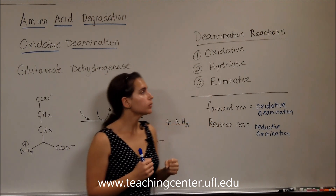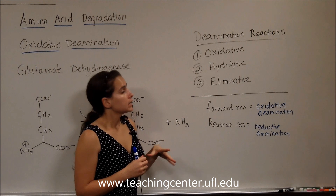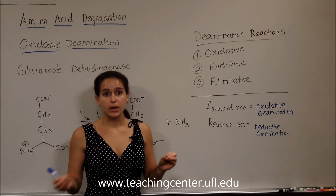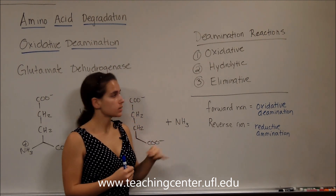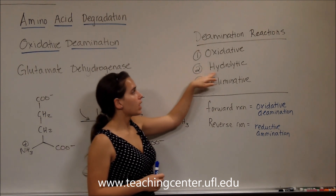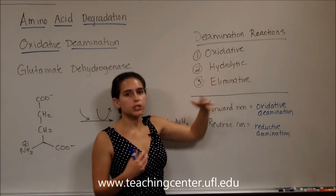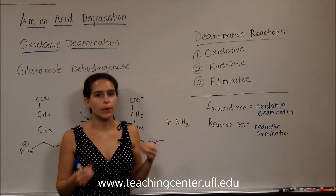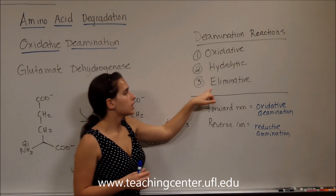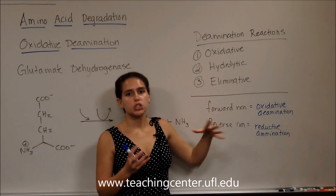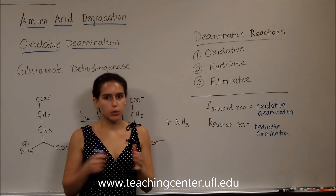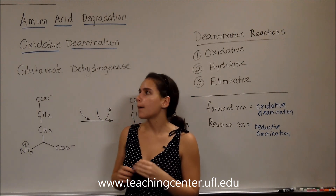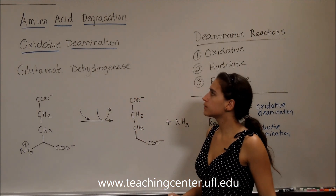Oxidative deamination yields our ammonia — that's the point of deamination. Then we have hydrolytic, which is going to use water, and we'll talk about that later. And then eliminative, which is going to just take off that amino group. So let's look at the first one, which is oxidative.